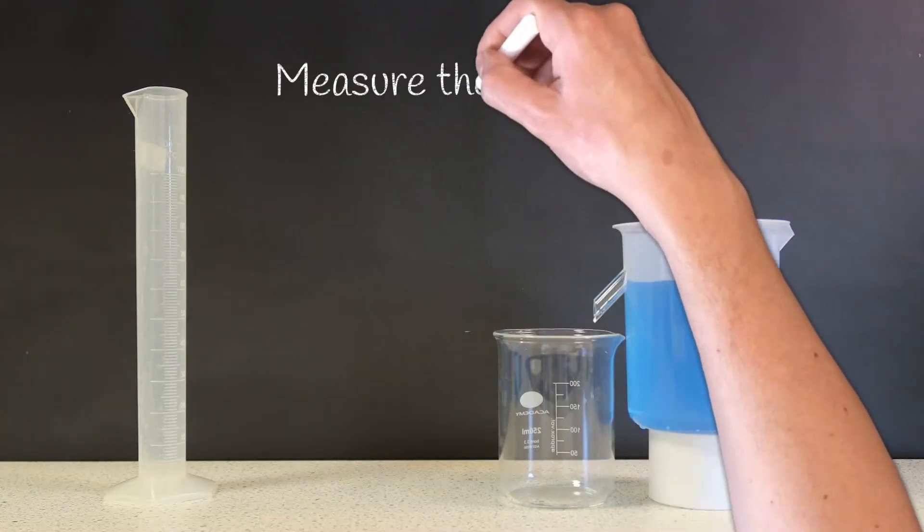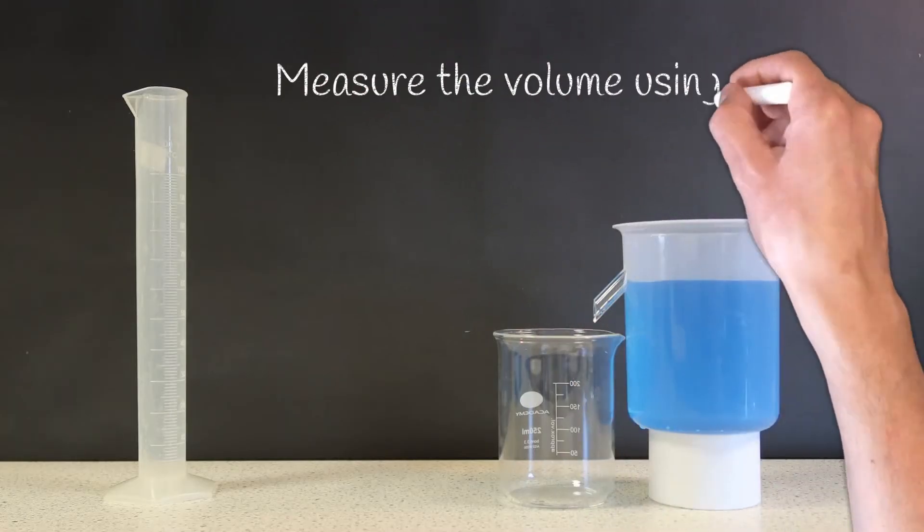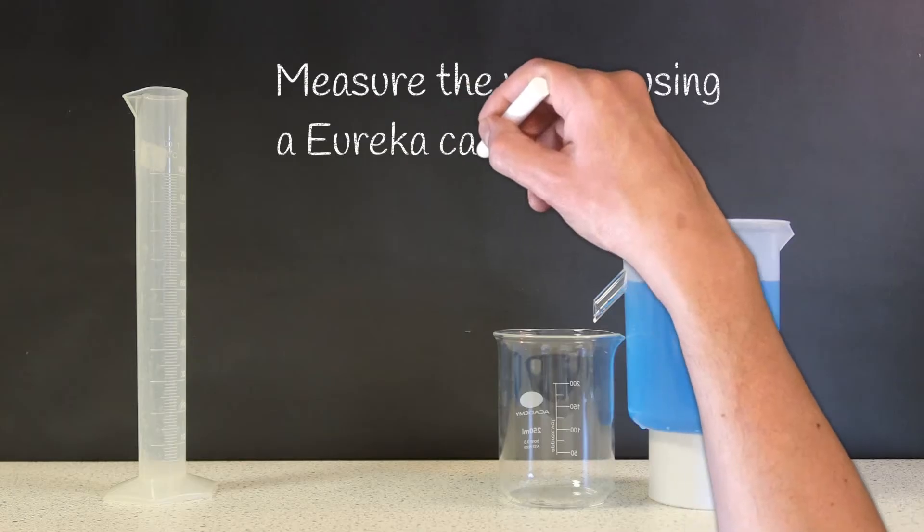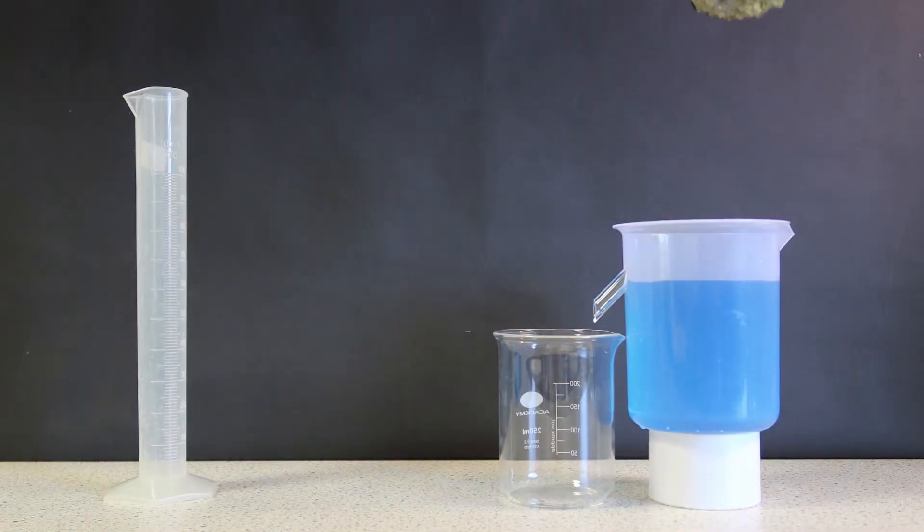Now we have the mass we need to find out the volume. As there's no easy equation to work out the volume, we're going to determine it practically. We can use a Eureka can.